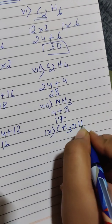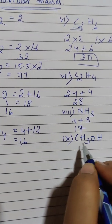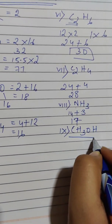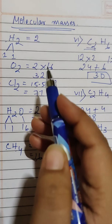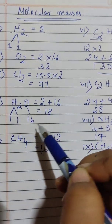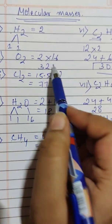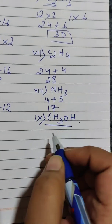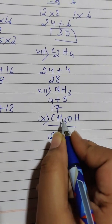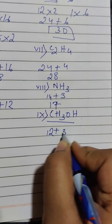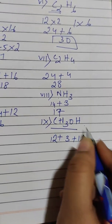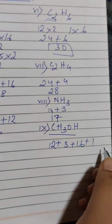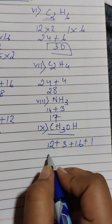CH3OH. The molecular mass of CH3OH is equal to... So, carbon once, hydrogen thrice, oxygen once, hydrogen once. 12 plus 3, 15.